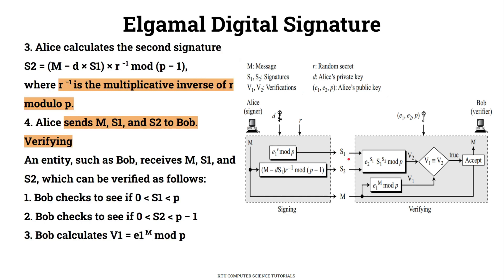Alice's second signature component is S2. S2 is computed from the plain text message M, minus D times S1 — where D is Alice's private key — and the result involves R. R must be chosen such that gcd(R, P-1) = 1. Then S2 is calculated mod P-1.